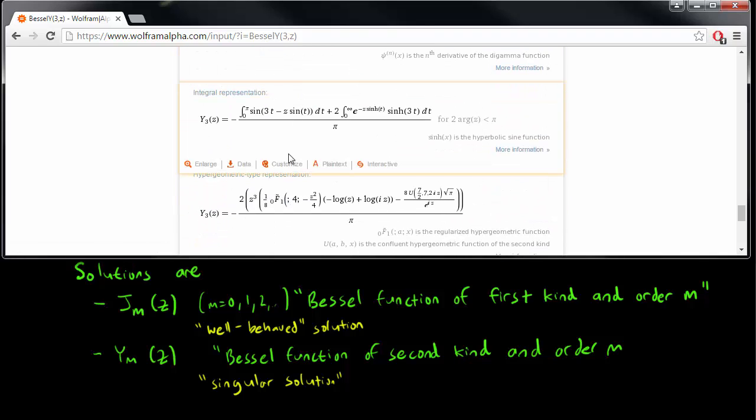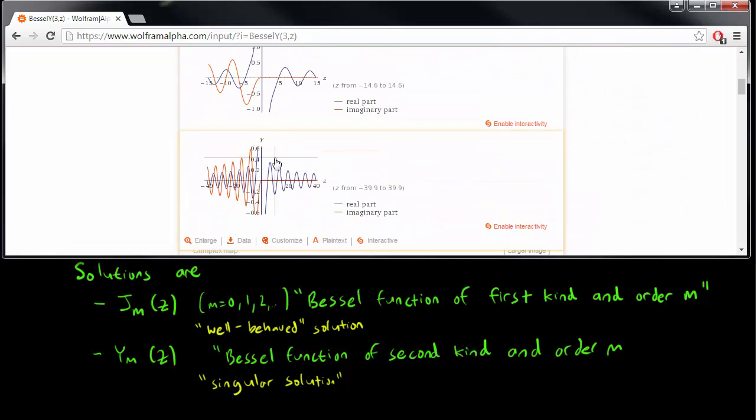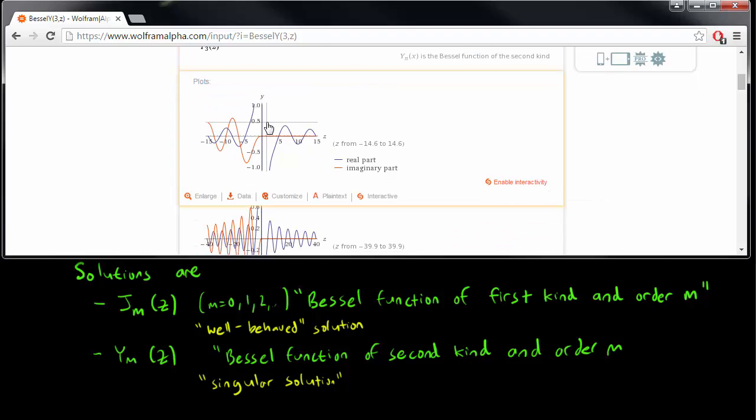So again, we will never have to think about how to write down the Bessel functions, they are really complicated. But the important thing to know is that for the second kind function, it heads towards infinity as z goes to 0. And for the first kind, the Bessel function is always well behaved.